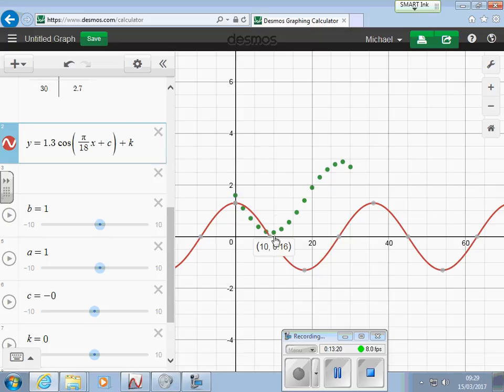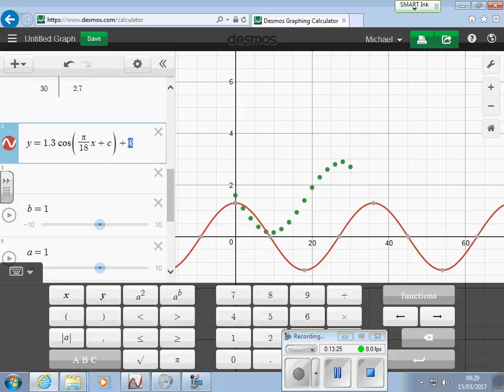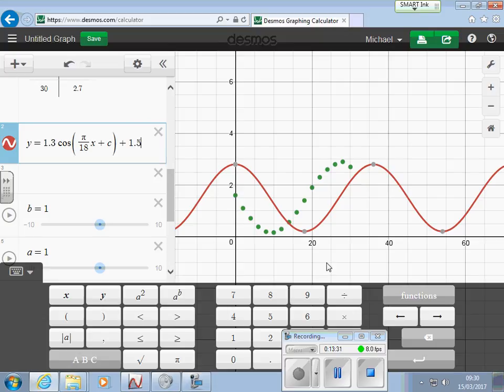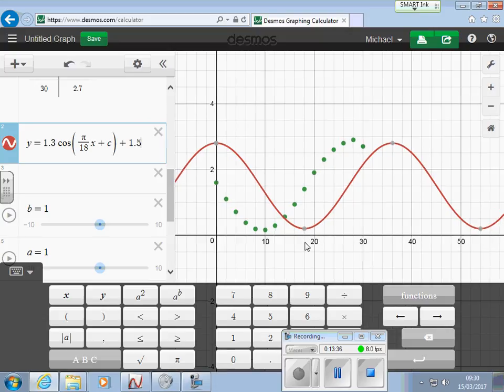So if you take, how did we find the middle before? We effectively found the middle to do the amplitude. So that was the biggest, take away the smallest. So we're talking about 1.3, let's add 0.2 on. Try that, 1.5. Get in there.